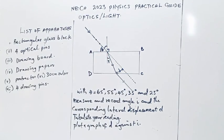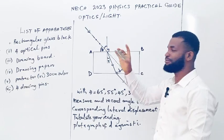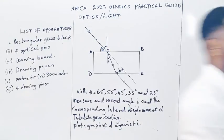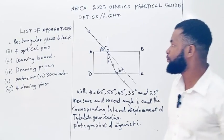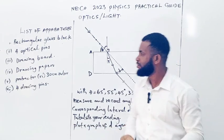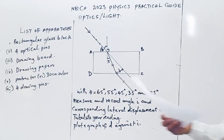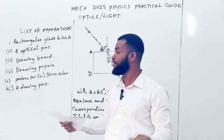The apparatus given is a rectangular glass block. This is the rectangular glass block and the diagram. We also have optical pins, a drawing board, and drawing papers.